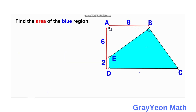For our second method, we divide the blue region into several parts. We drop a line from B downward perpendicular to CD, calling the intersection point F. From point E, we draw a horizontal line perpendicular to BF, and we call the intersection of these two new lines point G.